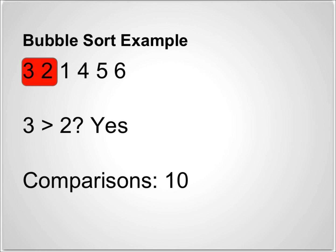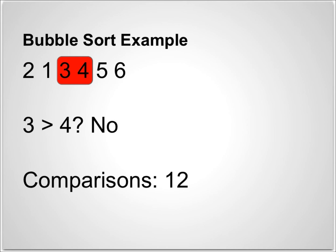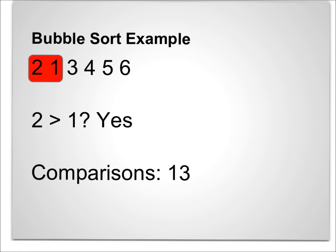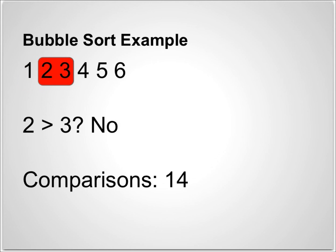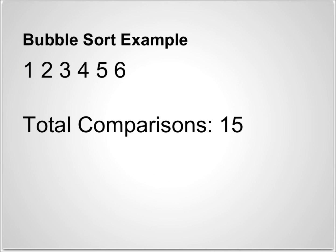Since 3 is greater than 2, we switch these. Since 3 is greater than 1, we switch these also. 3 and 4, however, stay in their positions. We look back once again to 2 and 1, and see that 2 is greater than 1. And then we note that 2 is not greater than 3, so they remain in the same position. Finally, we look at 1 and 2 — our bubble is all the way at the top — and we realize that 1 is not greater than 2. This completes our Bubble Sort. Note that now the list is in ascending order.